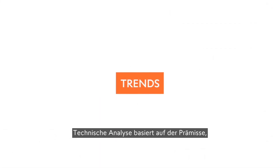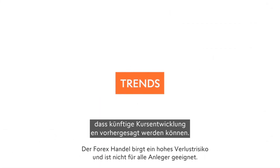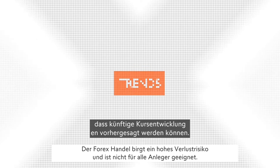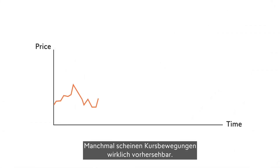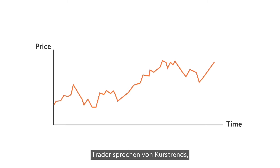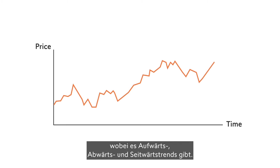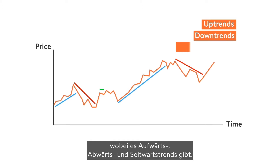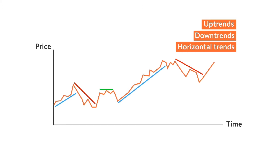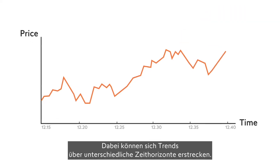Technical analysis is based on the premise that future prices can be predicted. Sometimes prices indeed seem to move predictably upwards or downwards. Traders say the prices trend and speak of uptrends and downtrends as well as horizontal trends.